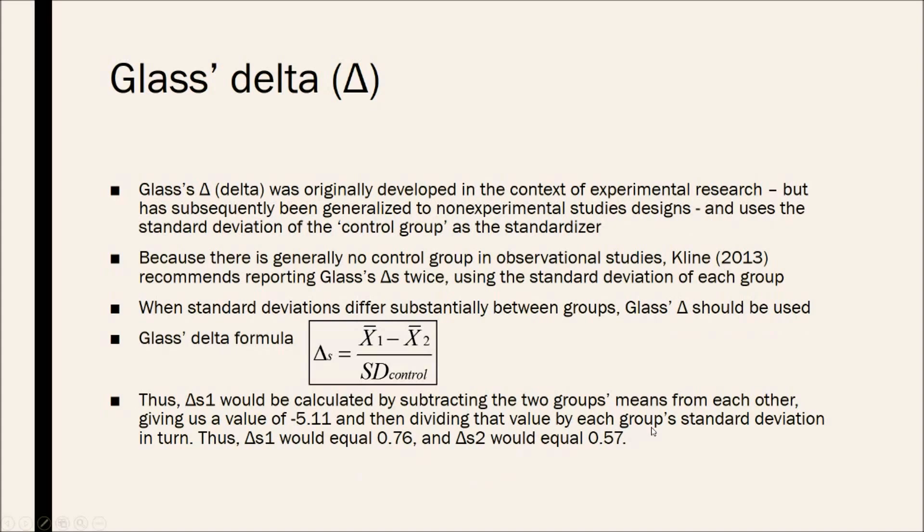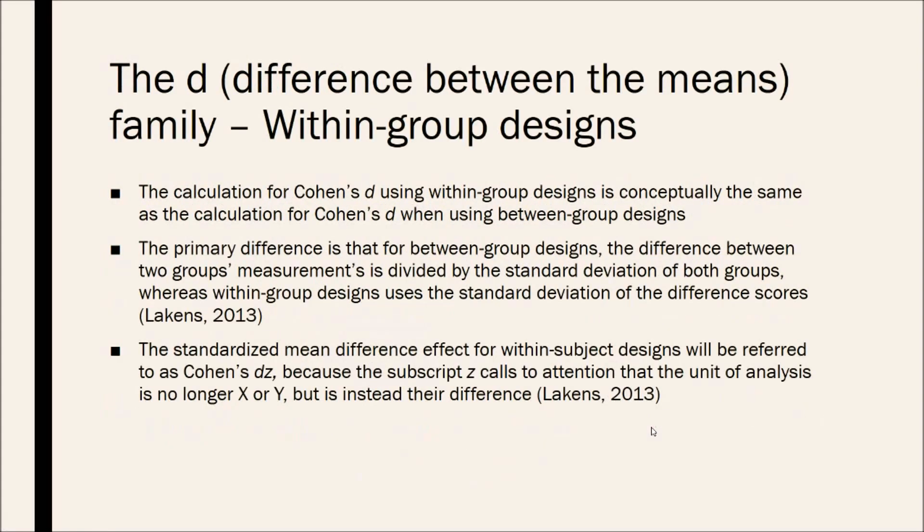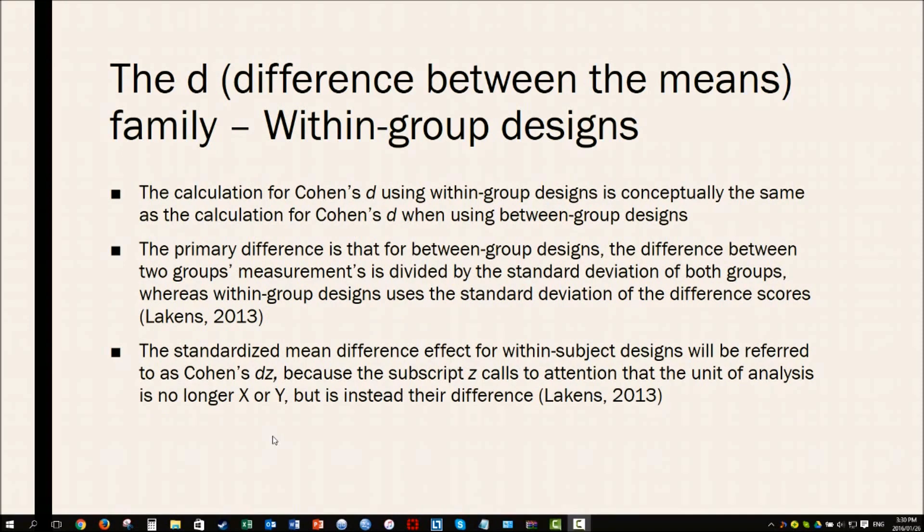So, now moving on to within group designs for the D family. The calculation for Cohen's D using within group designs is conceptually the same as the calculation for Cohen's D when using between group designs. The primary difference is that for between group designs, the difference between the two groups measurement is divided by the standard deviation of both groups, whereas for within group designs, it uses the standard deviation of the difference scores. The standardized mean difference effect size for within subject designs will be referred to as Cohen's DZ because the subscript Z calls to attention that the analysis is no longer X or Y, but is instead their difference.